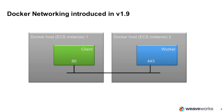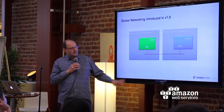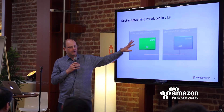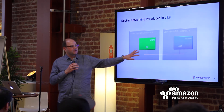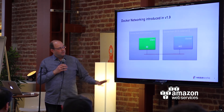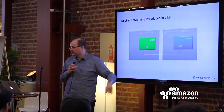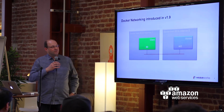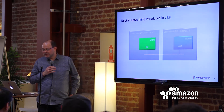Docker introduced Docker networking in version 1.9, where you now have a virtual network for the containers — a container-only network. It's an overlay that runs over VXLAN tunnels between the hosts. There is an Ethernet bridge on each host, all the containers are connected to the bridge and just use their normal port numbers. Between the hosts there are VXLAN tunnels, so that traffic goes across VPC or whatever it is on ECS.